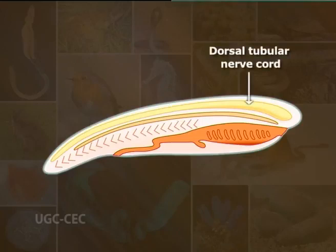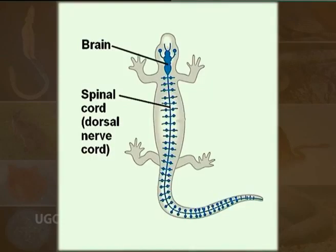This tubular nerve chord persists throughout the life in chordates. In vertebrates, the anterior region of nerve chord becomes specialized to form a cerebral vesicle or brain, which is enclosed in a protective cartilaginous or bony cranium. The posterior part of nerve chord transforms into spinal cord, which is protected within the neural canal of the vertebral column.